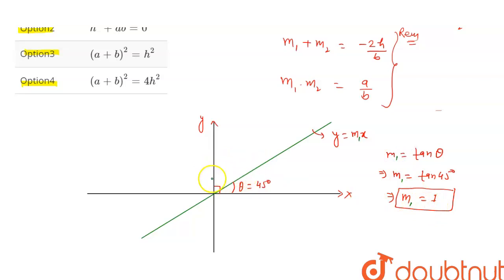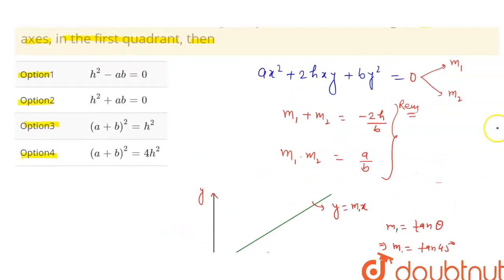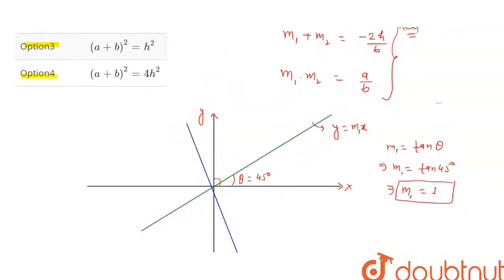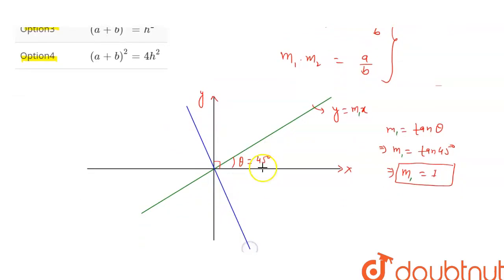Now, another line will also be passing through origin. We know this pair of lines passes through origin, and one line is the angle bisector of the first quadrant. Then the second line will also be like this, passing through origin. Let's say the slope of this line is m₂.